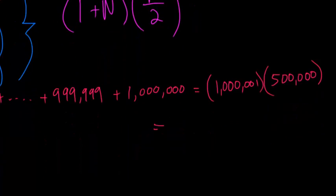So if we use a calculator, we can get that the sum of the first 1 million numbers is equal to 500,500,000.